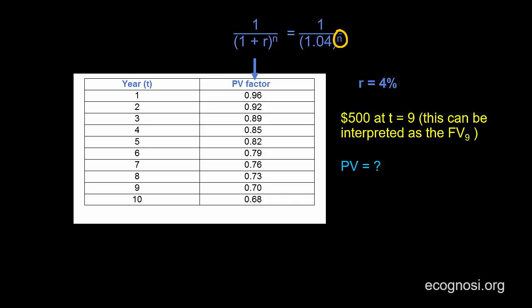So in similar fashion to what I did before, I will go over here at 9 and I will find the appropriate present value factor. I will then multiply my 500 by this number.